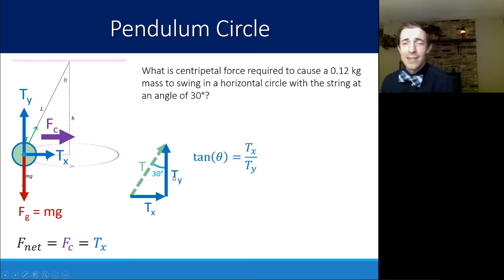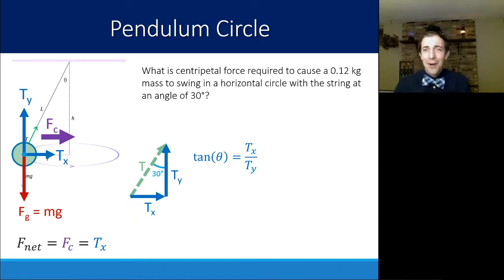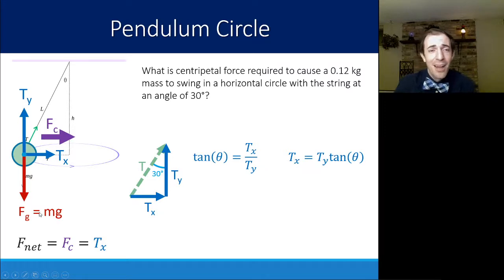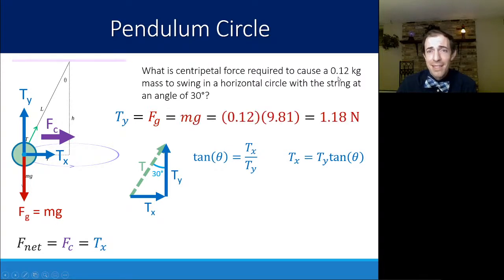Tangent is opposite over adjacent—Tx over Ty. Solving that for Tx means that if I know Ty, it's just Ty times the tangent of the angle, that 30 degrees. Now let's figure out how we can find Ty. I know that this isn't moving up or down, so if I can find Fg, I know Ty. Fg is just mass times gravity. I'm given the mass is 0.12 kilograms, gravity is 9.81, which means Ty is 1.18 newtons.